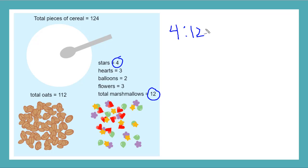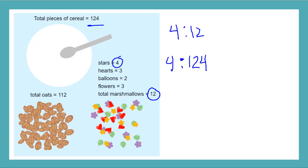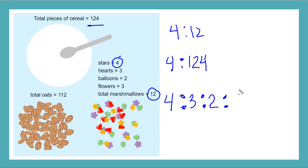But how about a ratio of star marshmallows to total cereal pieces? So now I'm comparing my stars to the total pieces, so I'd have a ratio of 4 to 124. But I could even write the ratio of all of the parts, like I did for the colors in the paint example. So I could write the ratio of stars to hearts to balloon to flowers as 4 to 3 to 2 to 3.